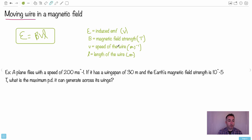Just to show you how you could quantify this, we have a plane flying with a certain speed. So now we know V is 200. It has a wingspan of 30 meters. That'll be your length. And the earth magnetic field strength we'll say is 10 to the negative 5 Teslas. That's actually what it is most places on earth. What's the maximum potential difference it can generate across its wings? You just have to use this equation, just BVL. It's that easy.